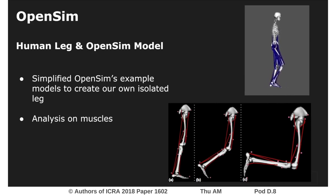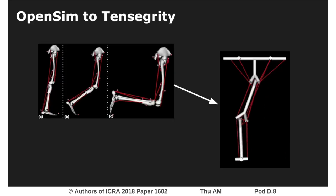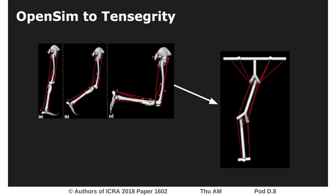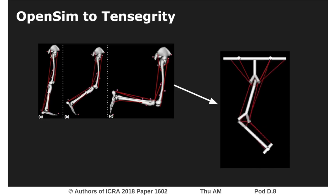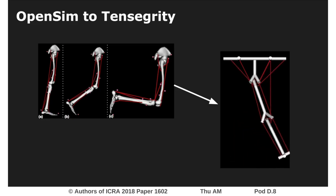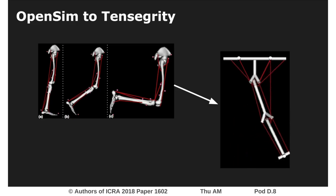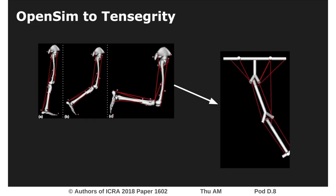By eliminating minor muscles we were able to isolate the three most dependent muscles for performing gait. OpenSim focuses primarily on creating human-based models performing specific actions. Our team broke down the fundamentals of the simulator and learned the foundation to make our own multi-body tensegrity structure.